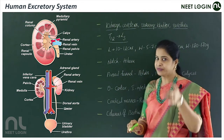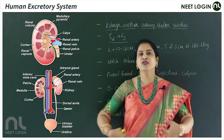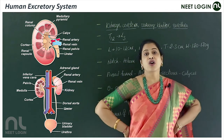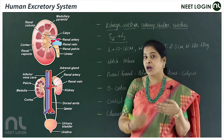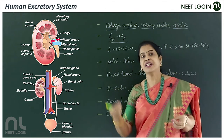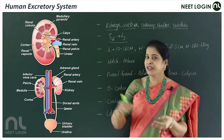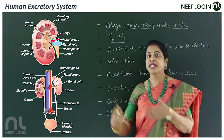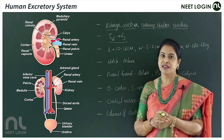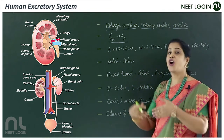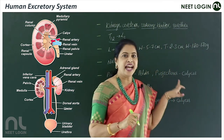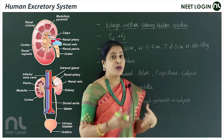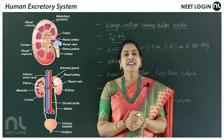The kidneys are also protected by two pairs of floating ribs. They are attached to the dorsal abdominal wall and are examples of retroperitoneal organs. Their measurements are approximately 10–12 centimeters in length, 5–7 centimeters in width, 2–3 centimeters in thickness, and they weigh around 120–170 grams.